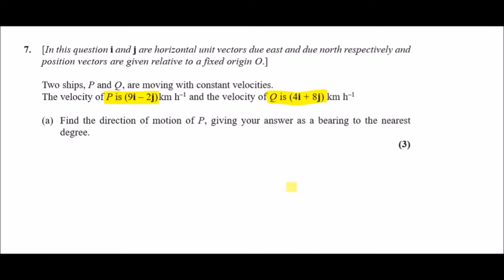For this one we need to figure out how to calculate the direction of motion of P given as a bearing. Whenever we're involved with direction of motion, this is simply looking at the velocity vector. Let's plot this on an ij graph. This is telling us it's moving 9 across east and 2 down, so the direction of P is 9 across to the right and 2 down.